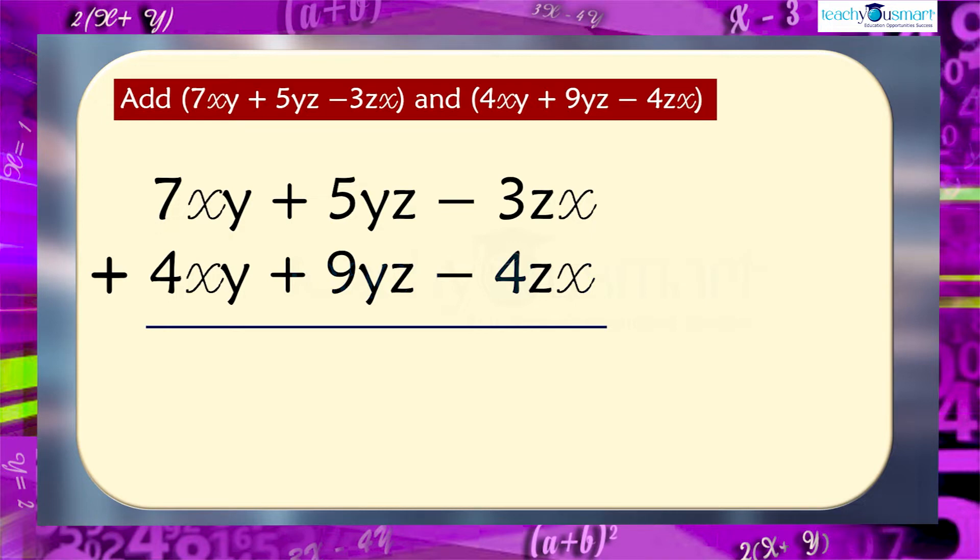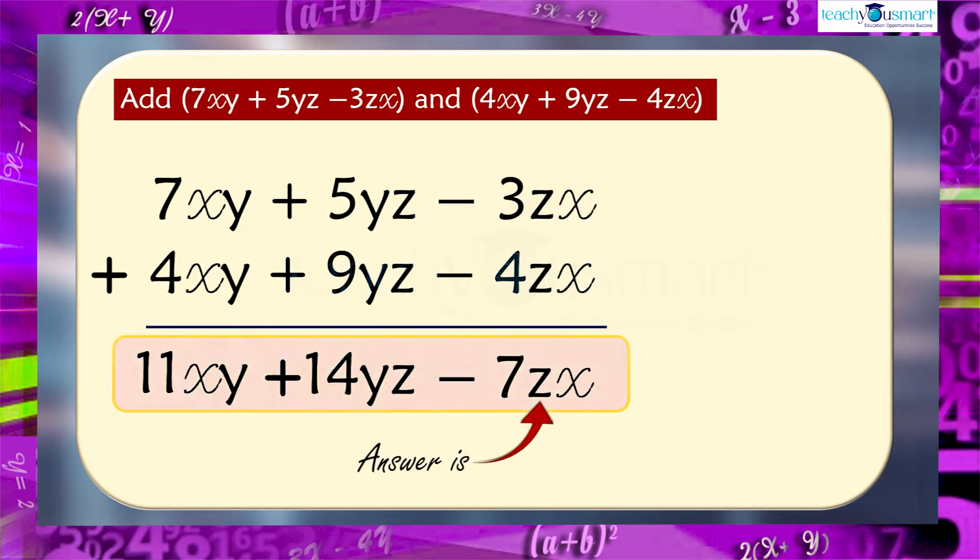That is, adding the like term 7xy plus 4xy gives 11xy. 5yz plus 9yz gives 14yz and minus 3zx plus minus 4zx gives minus 7zx. So the answer is 11xy plus 14yz minus 7zx.